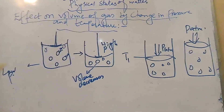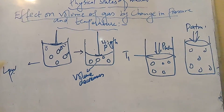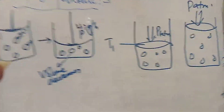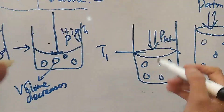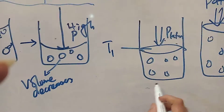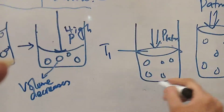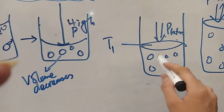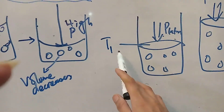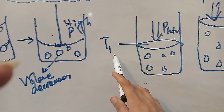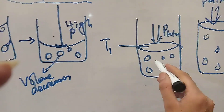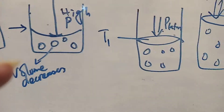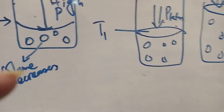Now if we look at the effect on the volume of the gas by change in temperature, we have a second diagram. We have gas molecules in a container at a particular temperature T1.